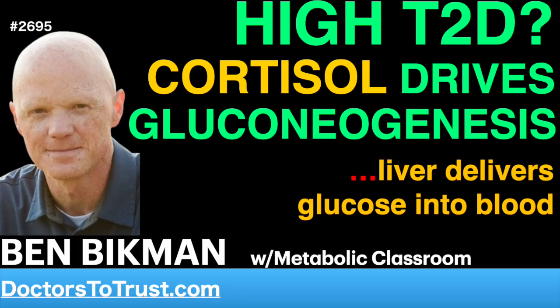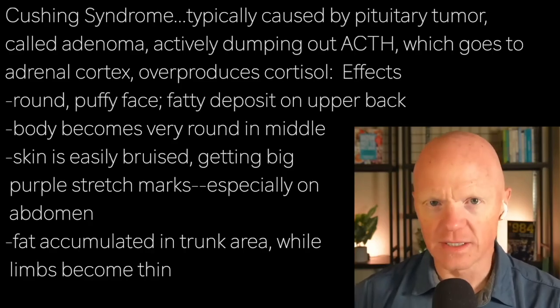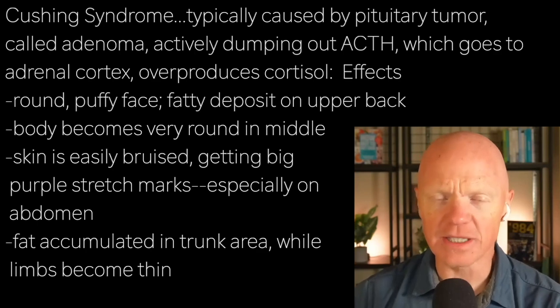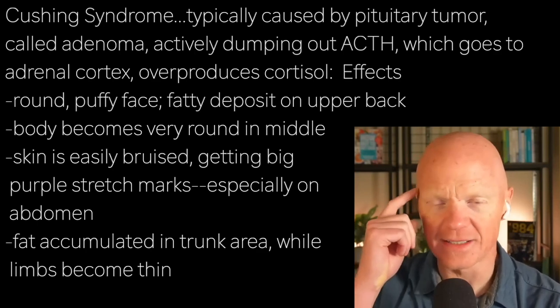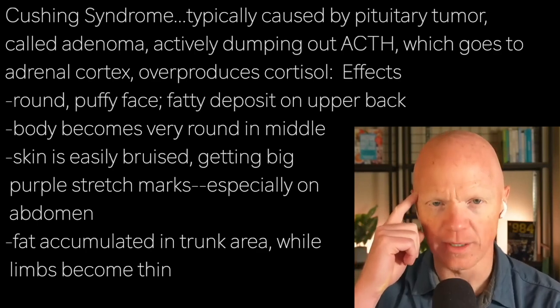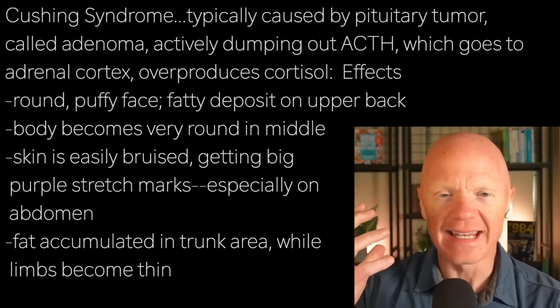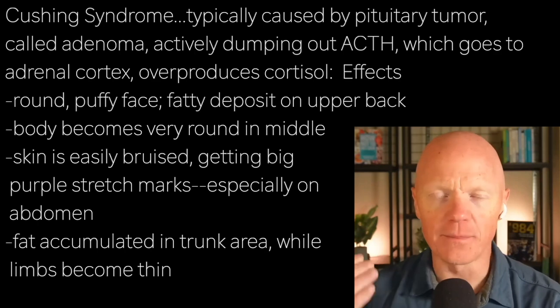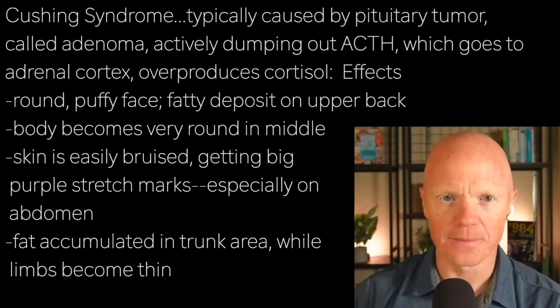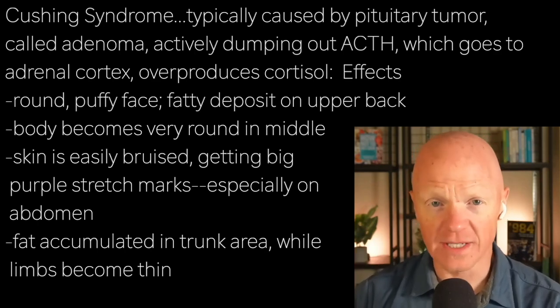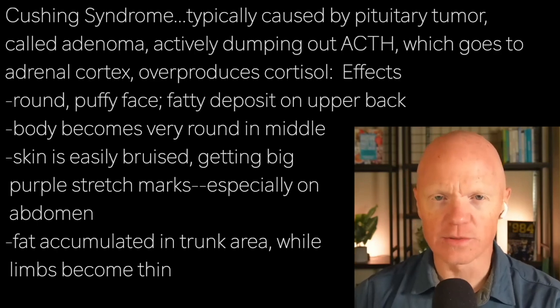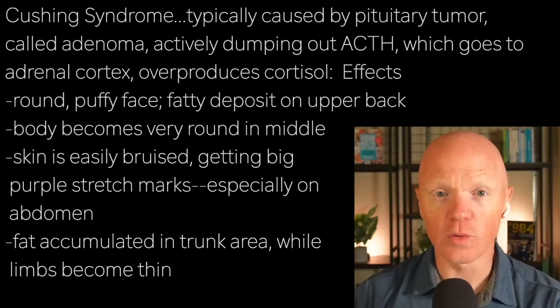At the most extreme end, we have a condition called Cushing's disease or Cushing's syndrome. Cushing's syndrome is a vivid illustration of cortisol excess. It's typically caused by a pituitary tumor, or what's called an adenoma, where the pituitary gland has this growth and it is actively dumping out ACTH. This overproduction of ACTH will go down to the adrenal cortex and result in the overproduction of cortisol.